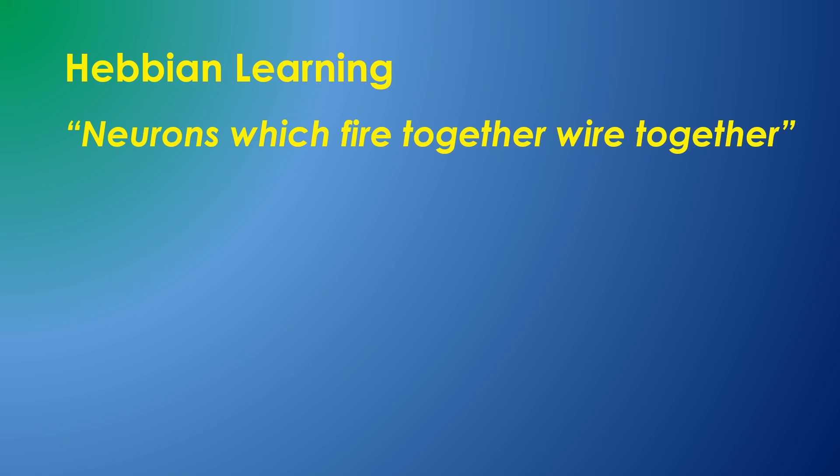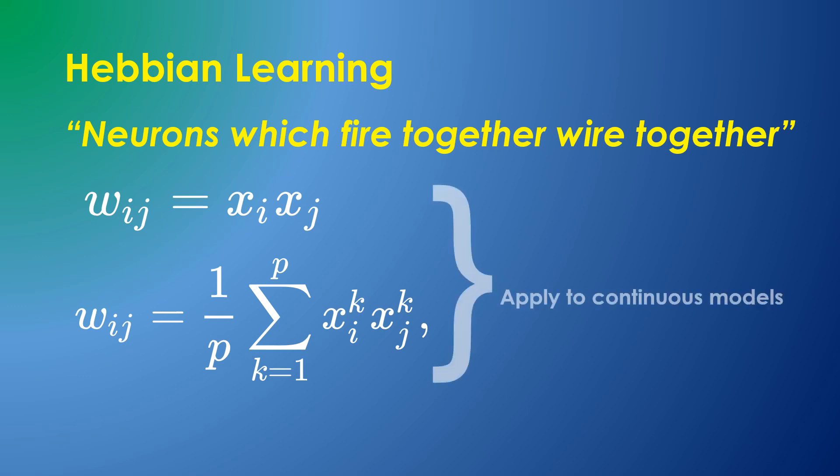These two equations are usually given to represent Hebbian learning. Although Donald Hebb was a psychologist and made his observations from biological spiking neurons, these equations apply to a continuous perceptron model and don't seem to make a lot of sense in a spiking environment when we're talking about the temporal relationship between neuron firings, information which isn't really included in these equations.